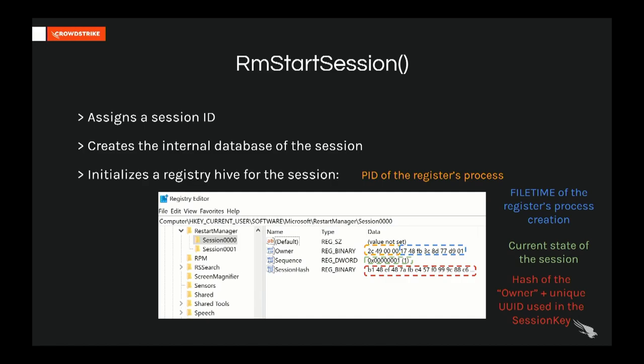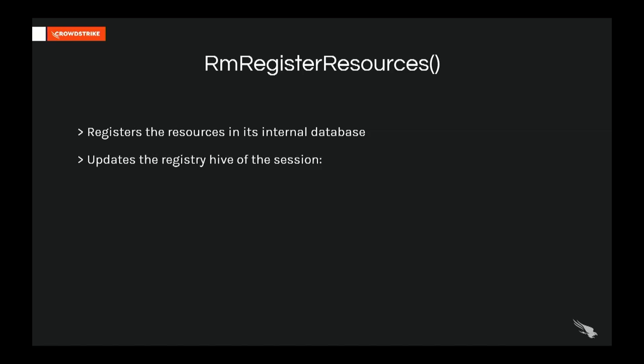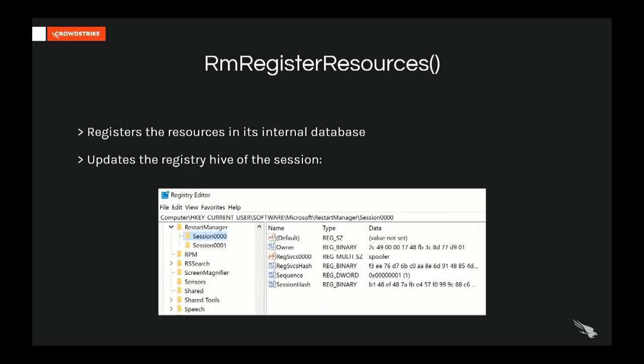Once the session has started, the application uses RmRegisterResources to register resources in the internal database. The Restart Manager updates the database and synchronizes the information with the newly registered resources in the session hive. For example, we can see two new values: the name of the registered resource — in our case the Spooler service — and the hash corresponding to the identifier of this registered resource.